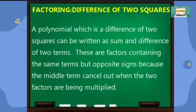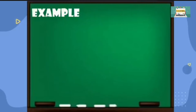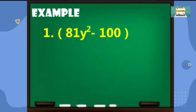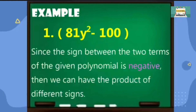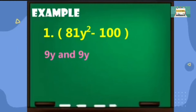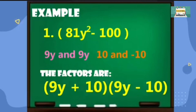A polynomial which is a difference of two squares can be written as a sum and difference of two terms. Let us have these examples. Number one, factor the polynomial 81y squared minus 100 completely. Notice that the first and the last term are both perfect squares, and the middle term is negative. We can think of factors of 81y squared that are both the same, that is 9y and 9y. The factors of 100 will be 10 and 10, one positive and the other negative to make it negative 100. So the factors are 9y plus 10 and 9y minus 10.